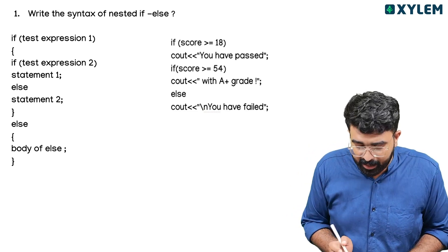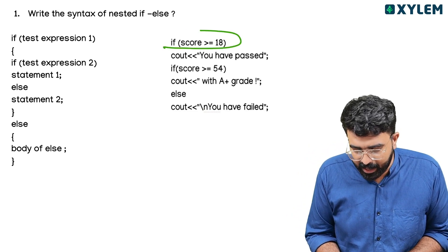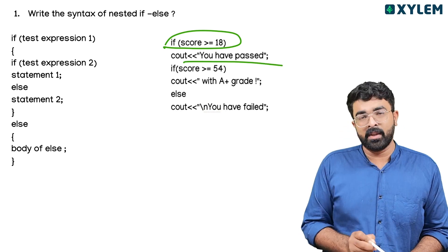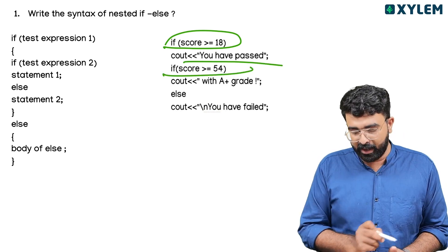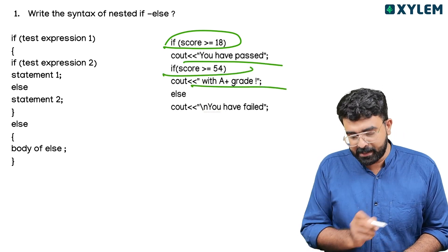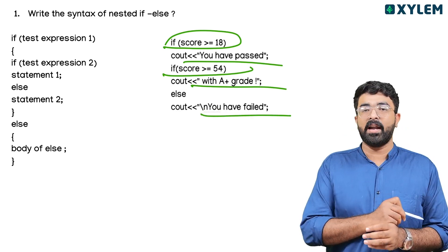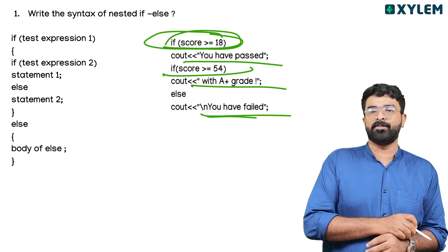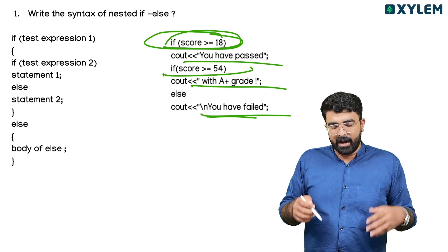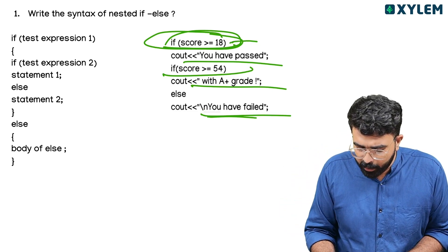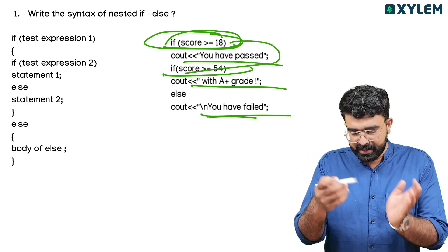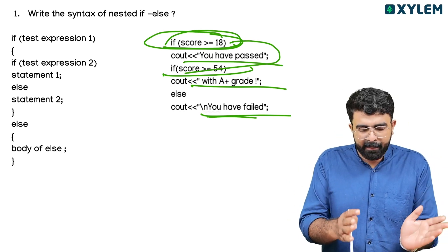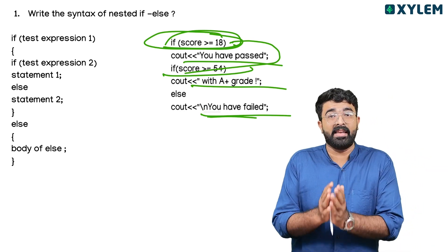I will give you an example. The score is 18 — you have passed. The score is 54 — you have failed. Condition is 135 — you have failed. The next condition is 54 or 2.